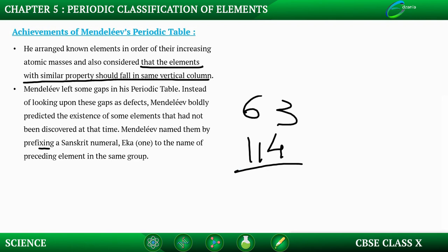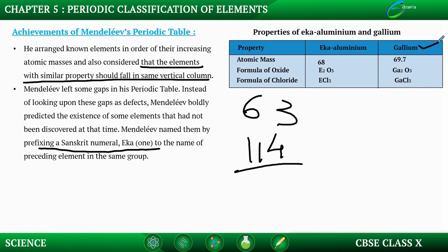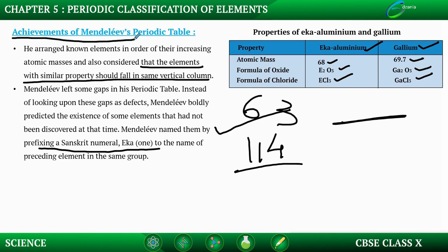Mendeleev named undiscovered elements by prefixing the Sanskrit numeral 'Eka' to the name of the preceding element in the same group — for example, Eka-boron, Eka-aluminium, and Eka-silicon. Scandium, gallium, and germanium were later discovered with properties similar to these predictions. The atomic masses, oxide formulas, and fluoride formulas of gallium closely matched Mendeleev's Eka-aluminium predictions, confirming his foresight. This was a major achievement — he knew more elements would be discovered beyond the 63 known at the time.